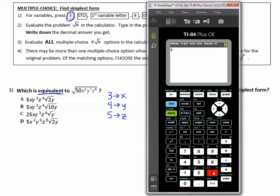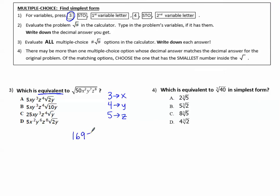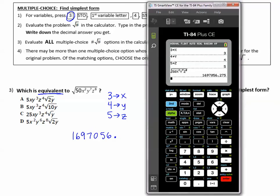Now we'll go to our calculator and store those values. I always type the number first, 3, and then the store button, x, enter. 4, store. Now the y is above 1 in green, so alpha 1. And then 5 for z: 5 store alpha 2 to get the z. Now my calculator will know to plug in 3 for x, 4 for y, and 5 for z. I'm going to type this original radical in the question: 2nd square root, type it just like it says, 50 x squared, alpha 1 for y, the exponent button, 7. Now we arrow right to get out of the exponent, and then z to the 8. Alpha 2 to get z, exponent button, 8. Press enter, and we write down this value, 1697056.275.